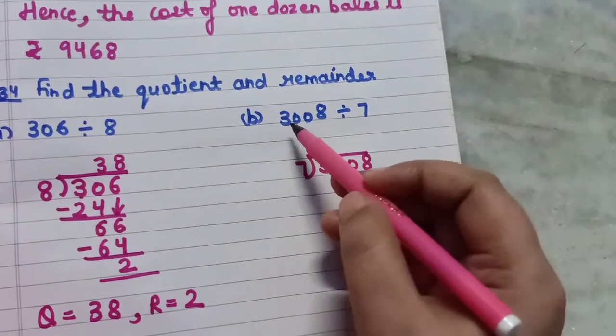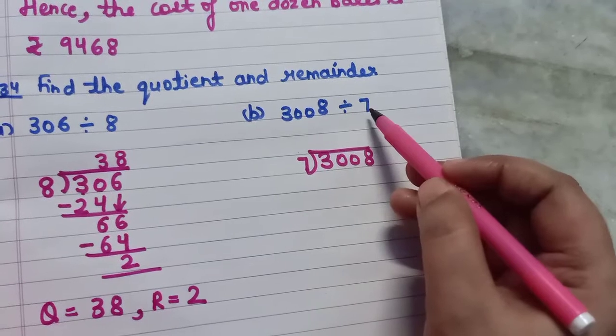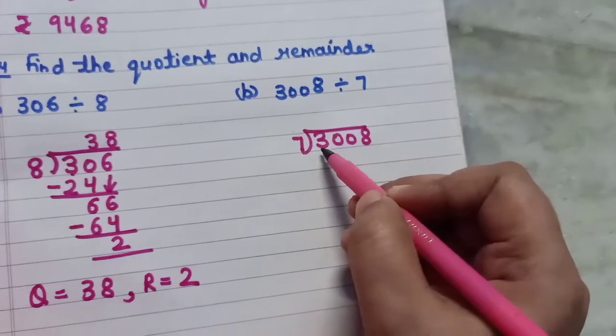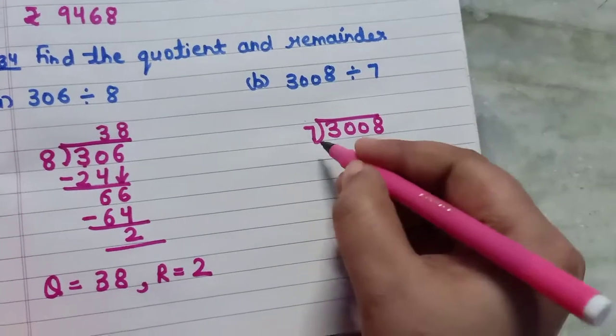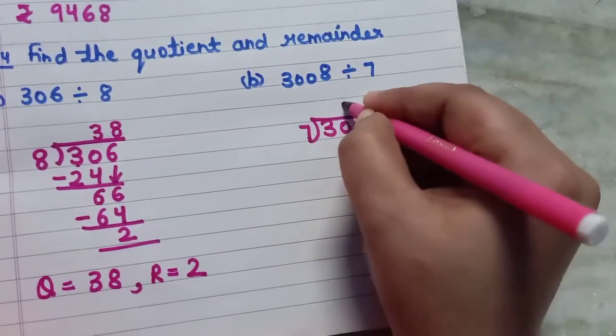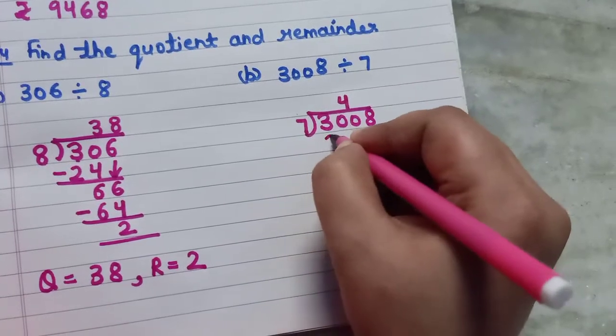Now let's do B part. 3008 we have to divide by 7. Again you can just check the first digit. This is smaller than 7, so you will take two digits together. So 7 fours are 28.